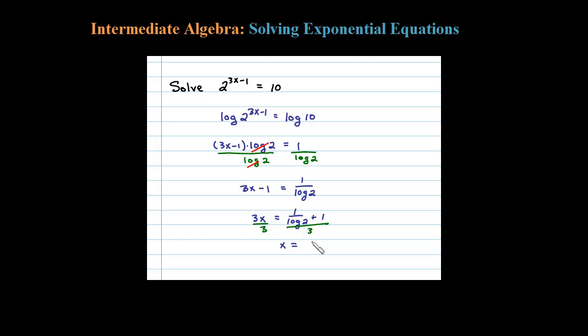you divide both sides by 3, you'll be left with 1 over 3 times log of 2 plus 1 over 3. Remember you'd have to divide both of those terms by 3, which on a calculator turns out to be